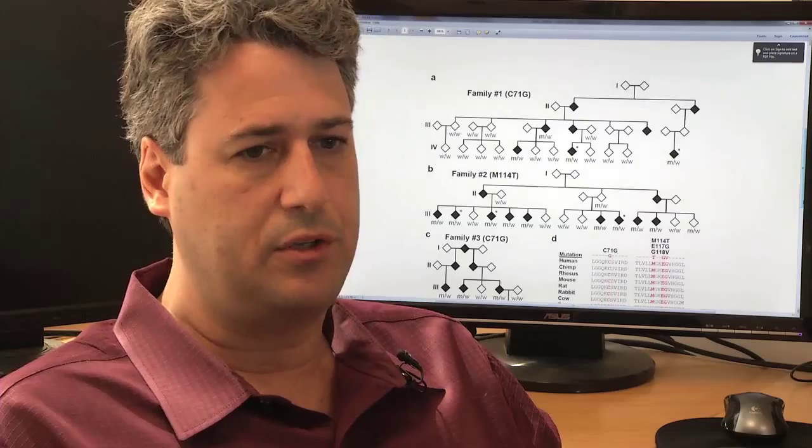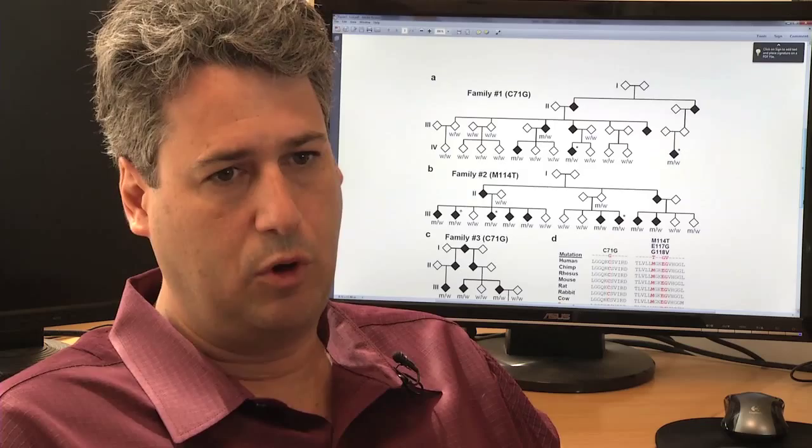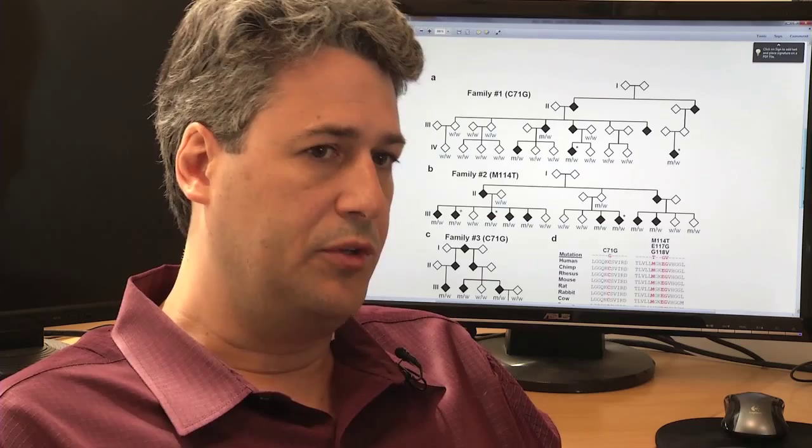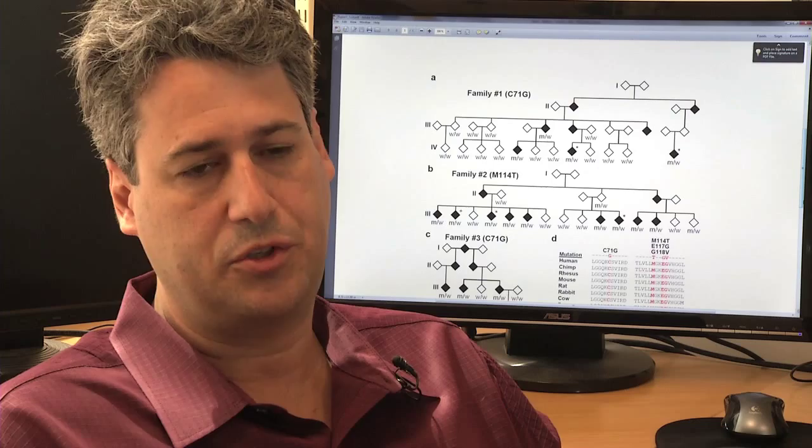Our idea was that if we had a defect in this protein, maybe it's altering how axons grow. One of the things we did next was to see if we put this mutant protein into cells, into axons, whether it affected how these axons grow.